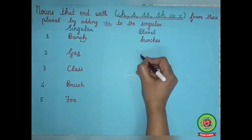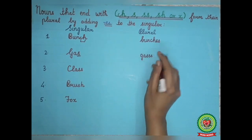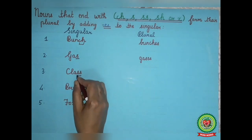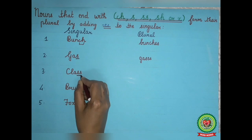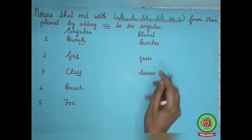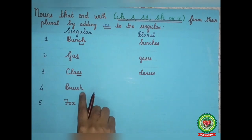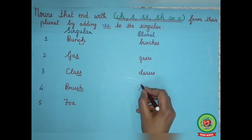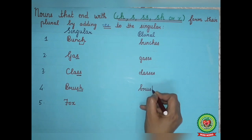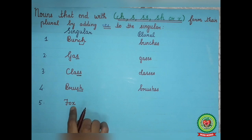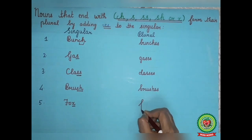Next example — the singular noun 'class' ends with 'ss,' so we will add 'es' to make it plural; 'classes' will be the plural noun. Next word — 'brush.' The singular noun 'brush' ends with 'sh,' so we will make it plural by adding 'es' to it; 'brushes' will be the plural noun. Next word — 'fox.' The singular noun 'fox' ends with 'x,' so we will make it plural by adding 'es' to it; 'foxes' will be the plural noun.